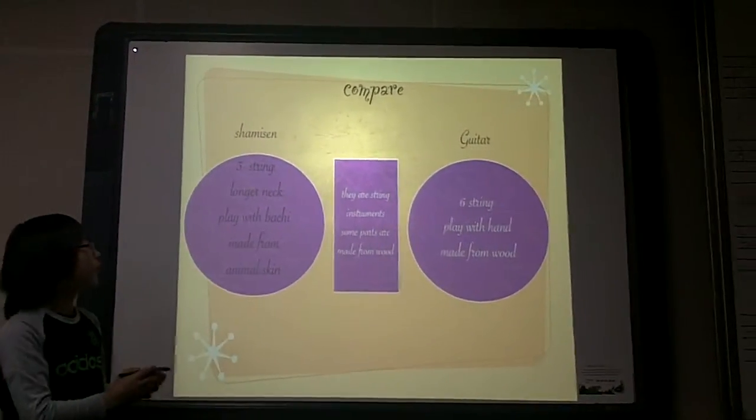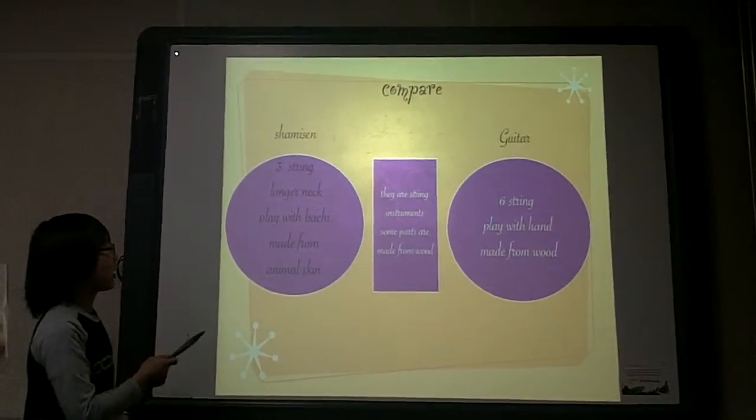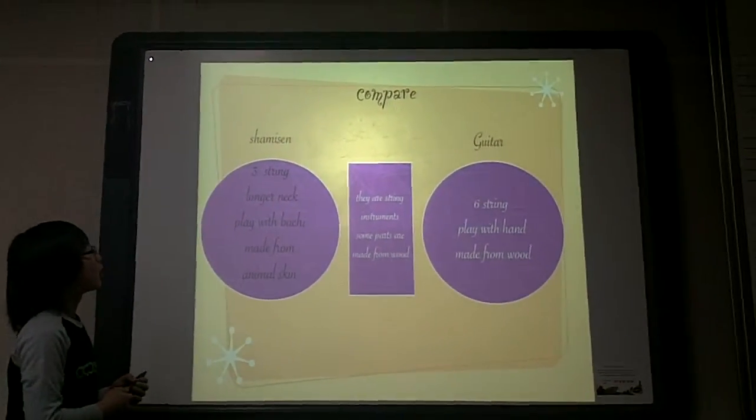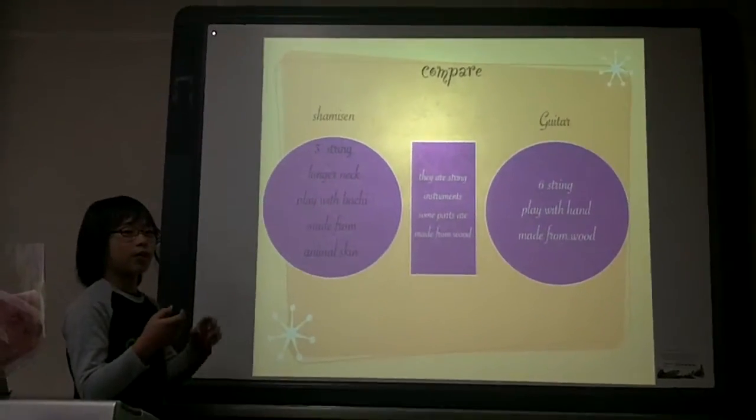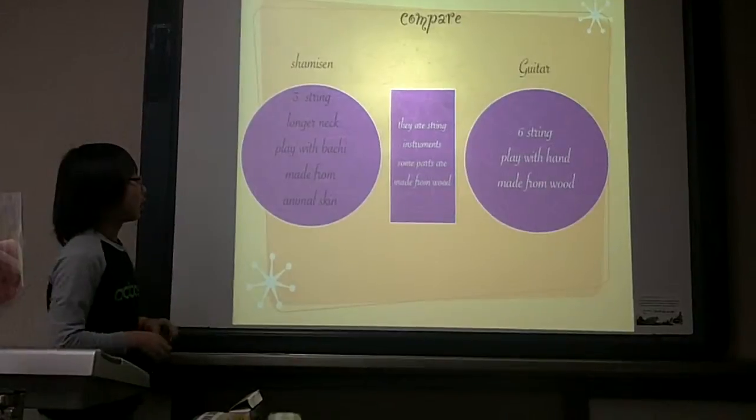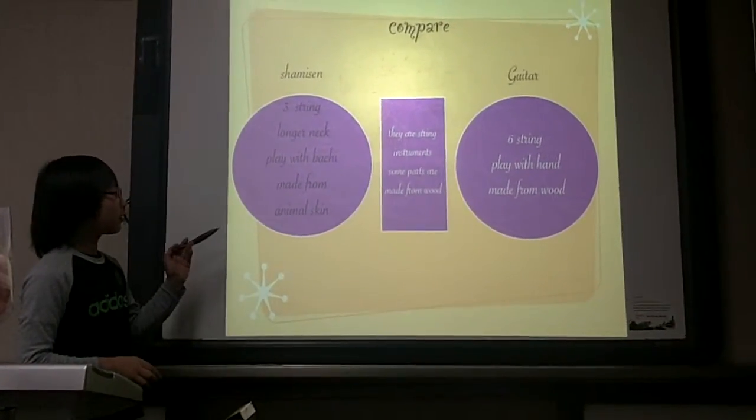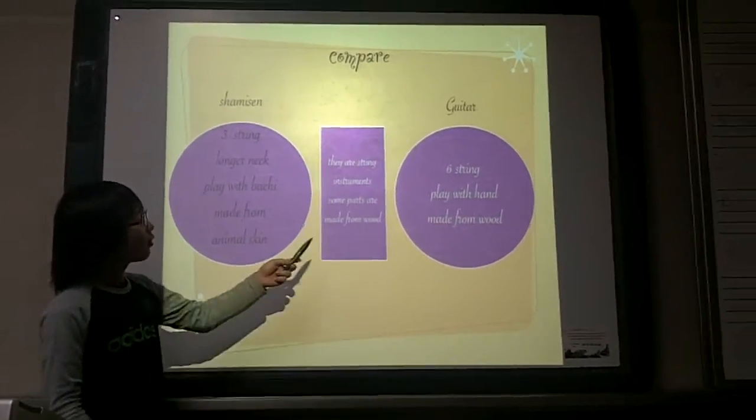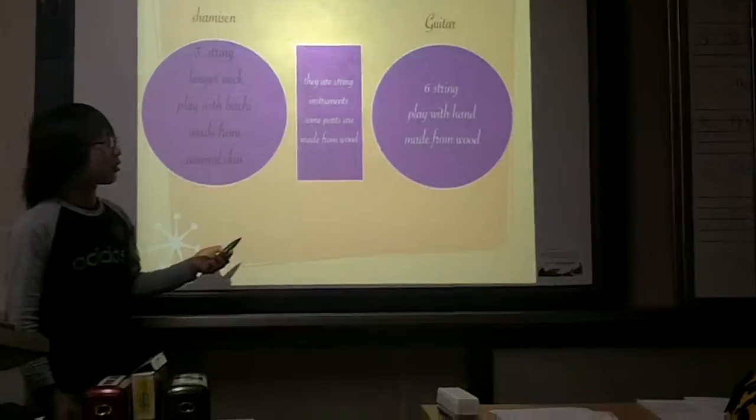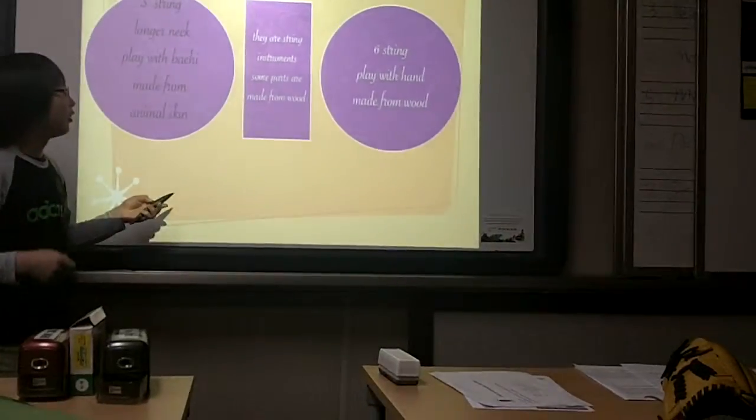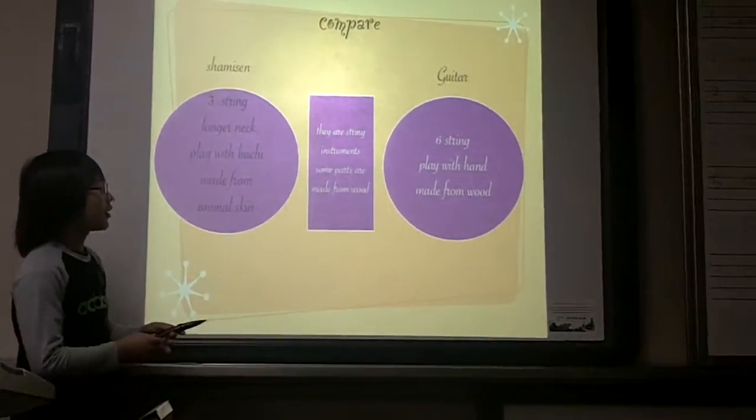This is a comparison. Shamisen has three strings and a longer neck. Shamisen is played with the shamisen's pick. The body's made out of animal skin. A normal guitar has six strings and is played with hand or a pick, and it is made out of wood.